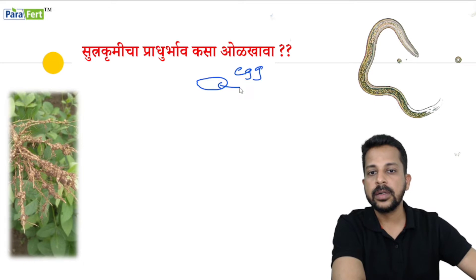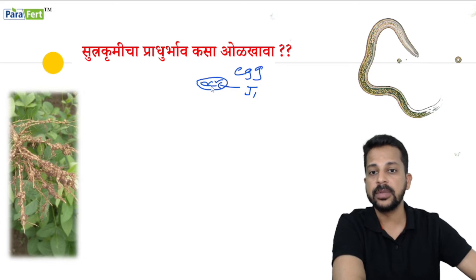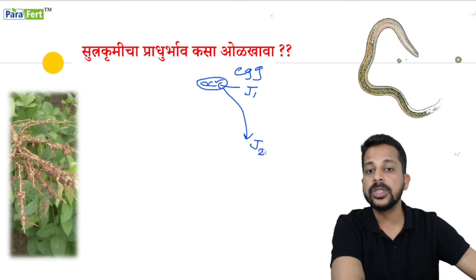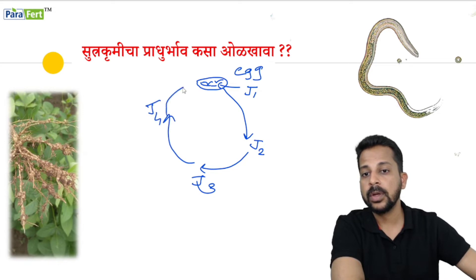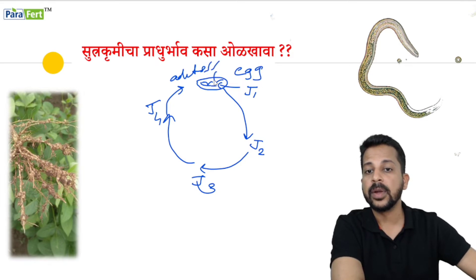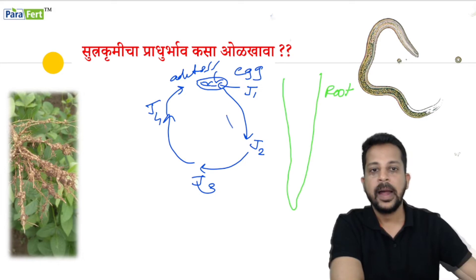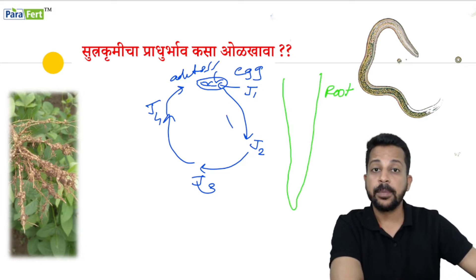This is the larva from outside. The first stage is J1, and the juvenile stages are developed. Then the larva stage is J2, then J3, J4, adults — male and female. This is the life cycle of the nematode.